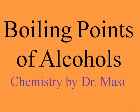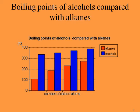Welcome to my channel. In this video I want to talk about boiling points of alcohols. This slide shows boiling points of alcohols compared with alkanes. The blue bars are alcohols and the red bars are alkanes. The blue bars show the boiling point of the first primary alcohols with up to four carbon atoms — methanol, ethanol, propanol, and butanol — and the red ones are methane, ethane, propane, and butane.